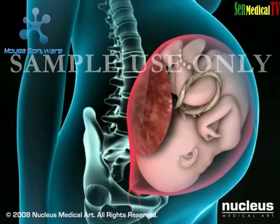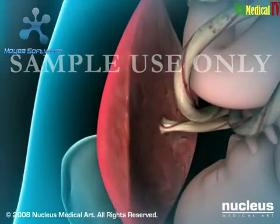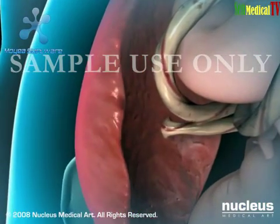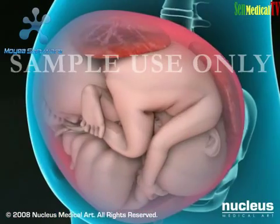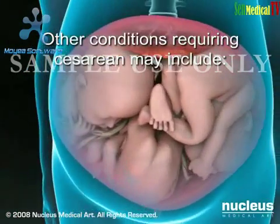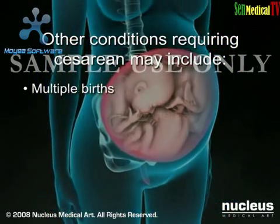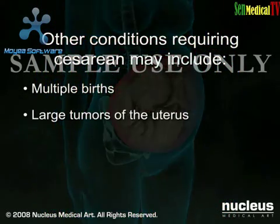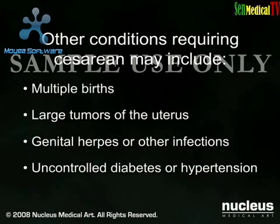Fetal distress can occur when the placenta separates from the wall of the uterus prior to delivery or the umbilical cord becomes compressed or squeezed. Other conditions that may require a cesarean section include multiple births, large tumors of the uterus, genital herpes or other infections, or medical problems such as uncontrolled diabetes or hypertension.